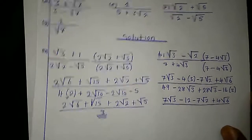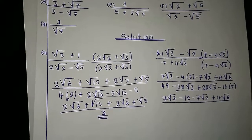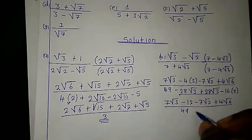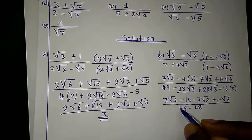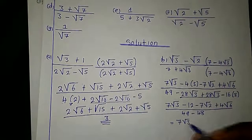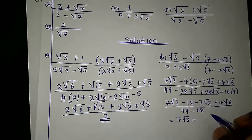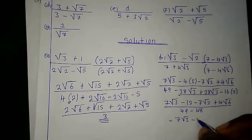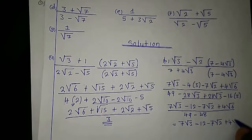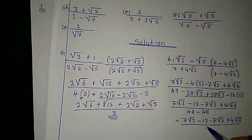Down here, the terms cancel. 16 multiplied by 3 is 48, so we have 49 minus 48, which equals 1. Therefore our final answer is 7 root 3 minus 12 minus 7 root 2 plus 4 root 6, all over 1.